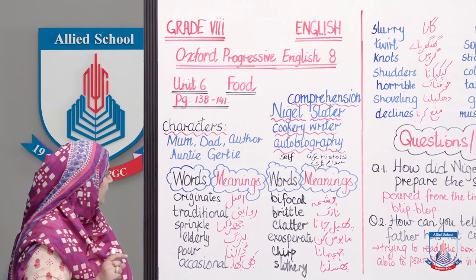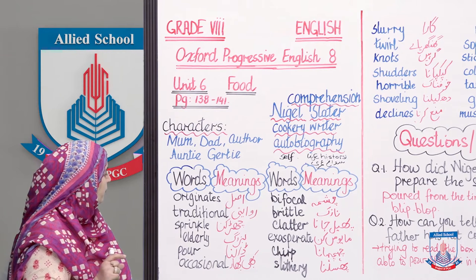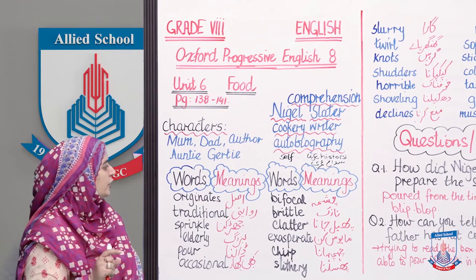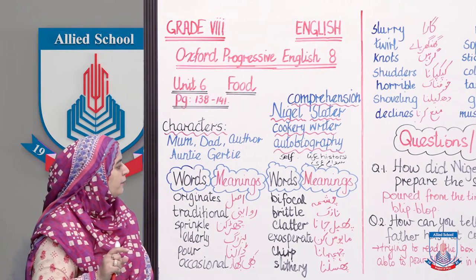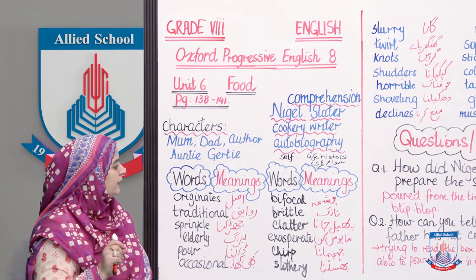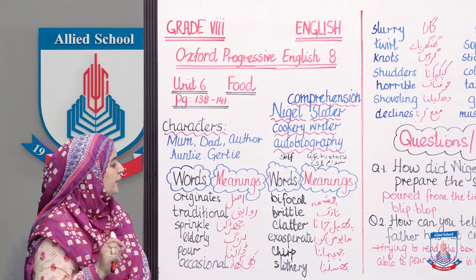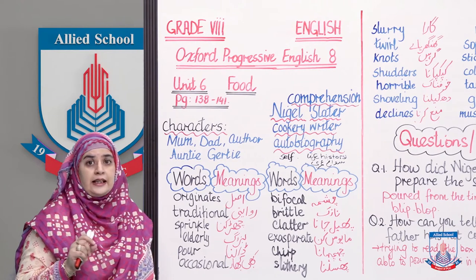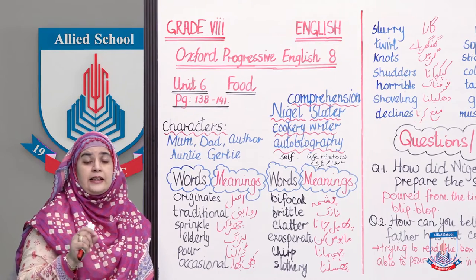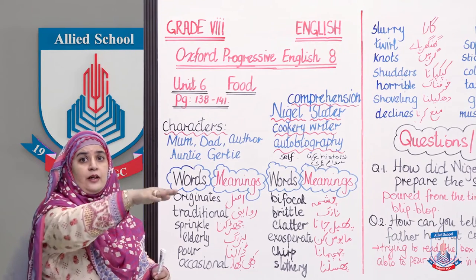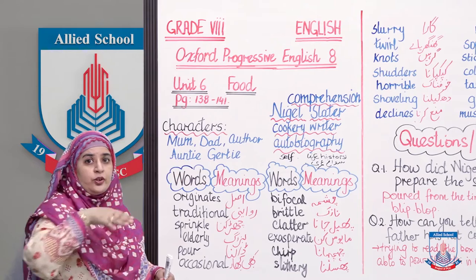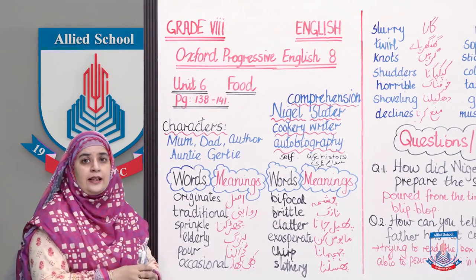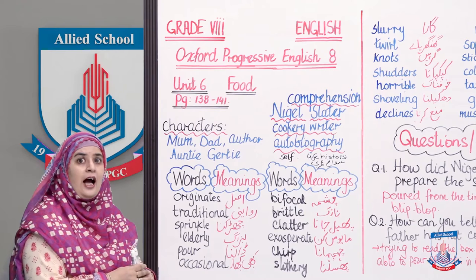Originates - asal. Traditional - rivayeti. Sprinkle - chhidakna. Elderly - buzurg. Pour - daalna. Occasional - kabhi kabhar. Bifocal - chashma. Brittle - naazuk. Clatter - phail jana. Exasperate - mayus kun. Chirp - chah chahana. Slithery - phisalna. Slithery kehte hain actually snake ki walk ko. Jo snake aise walk kare usko kehte hain slithering. Aur ek Slytherin house bhi tha.